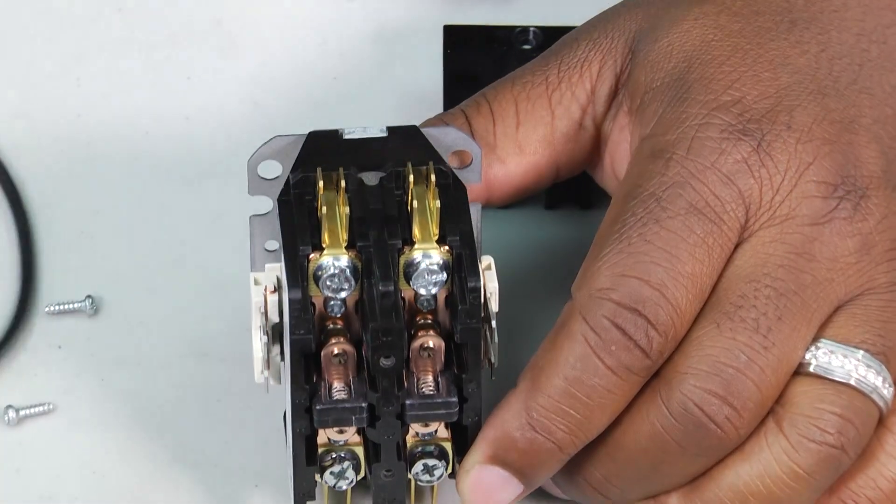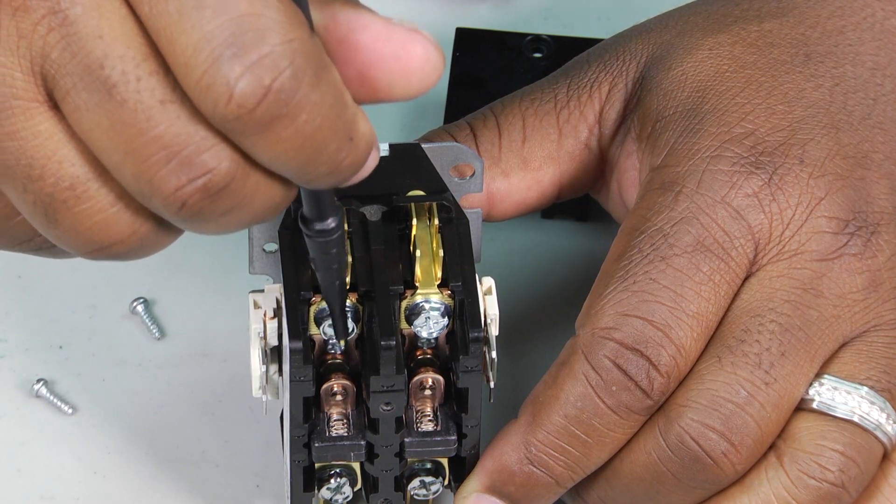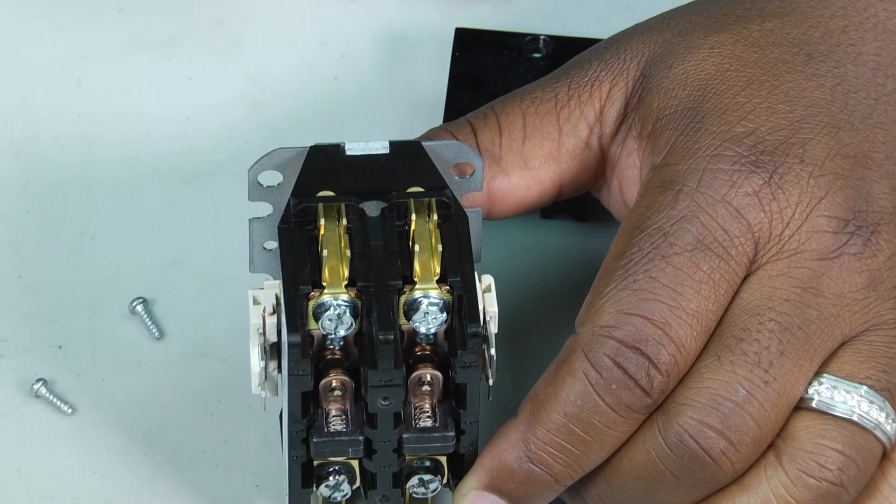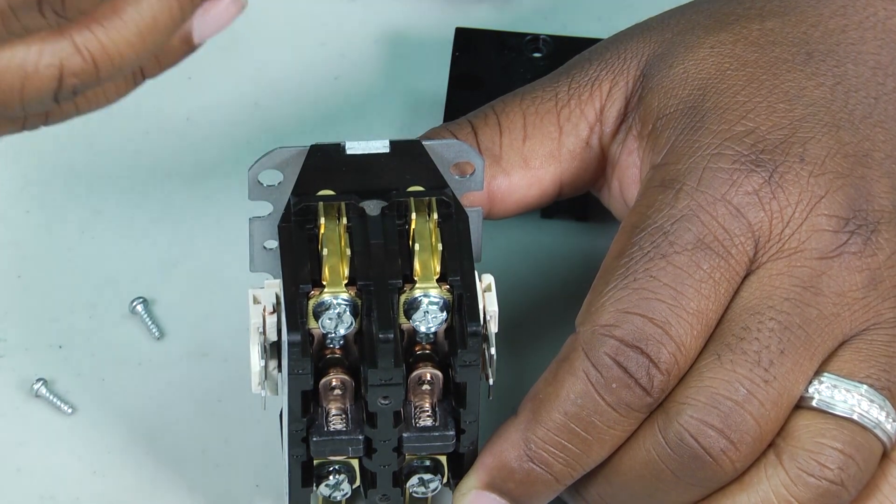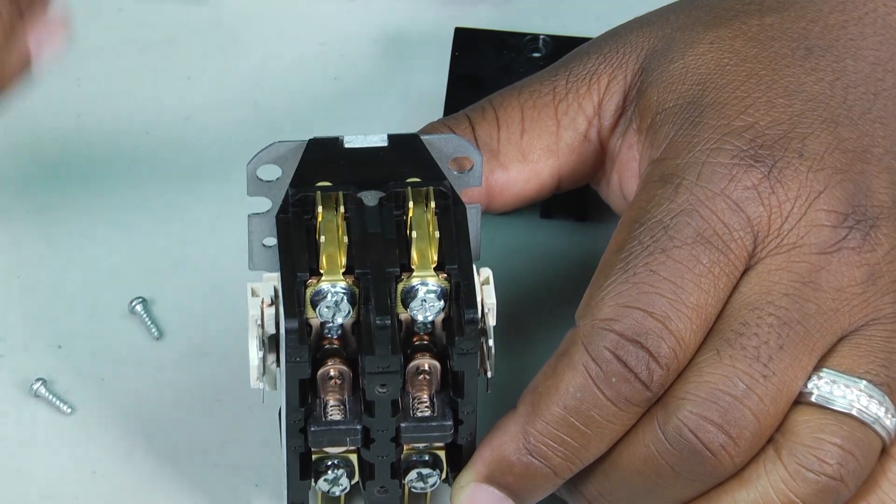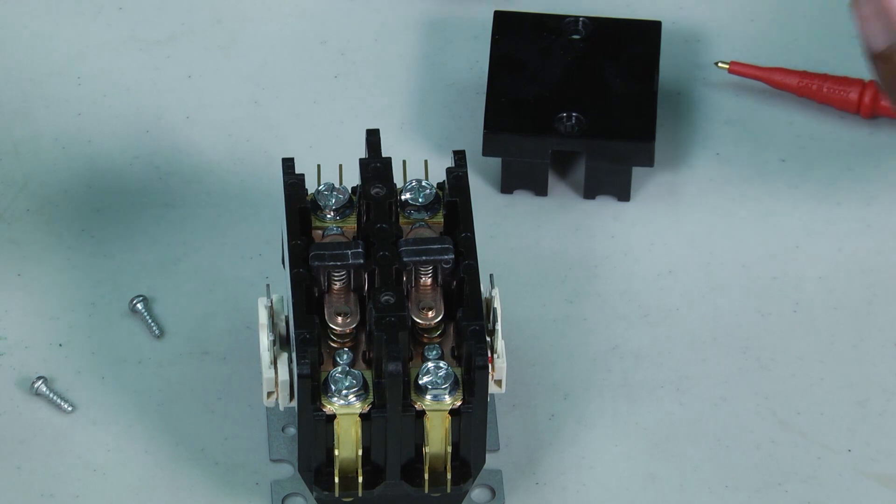When that arcing happens, if you look down inside, those contact plates either won't make connection for the electricity to pass through, or they'll be welded shut and the system just runs. You can't shut it off. That's one of the issues that happens, and probably one of the most common ones.